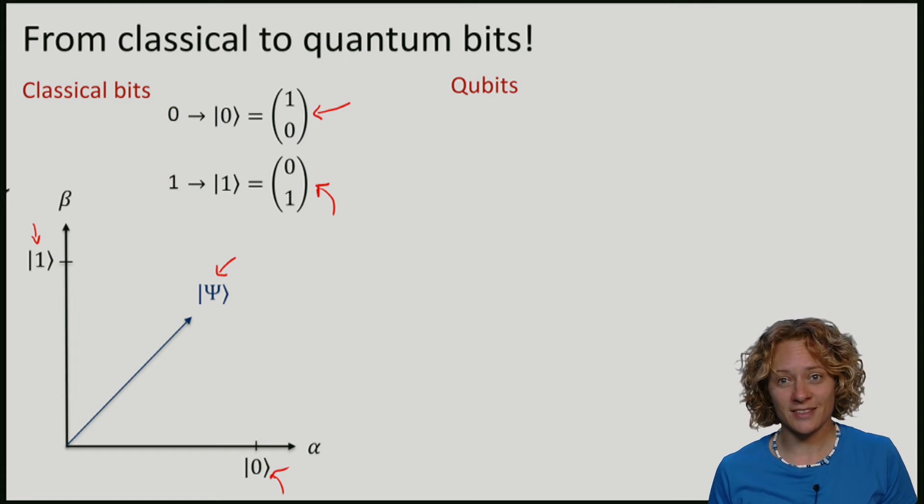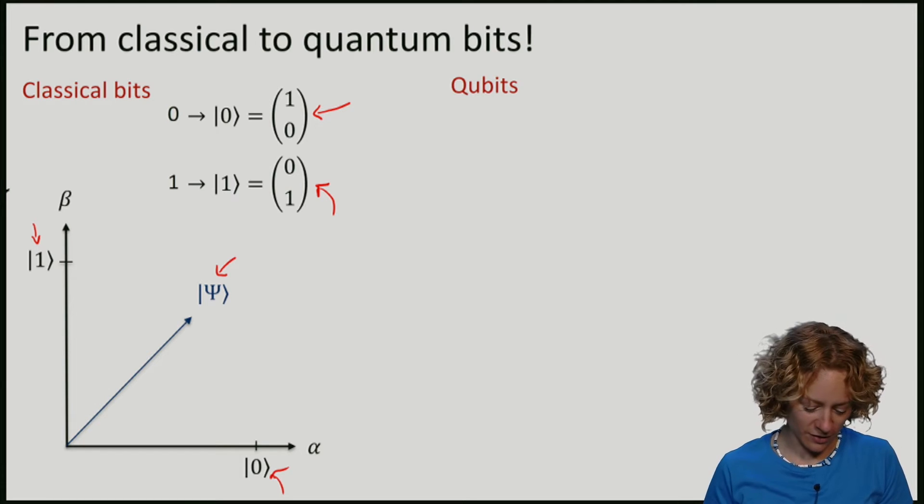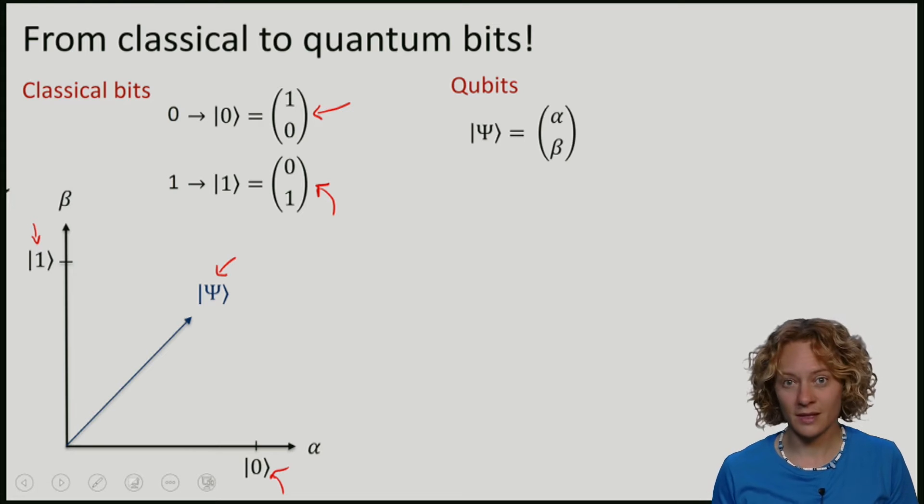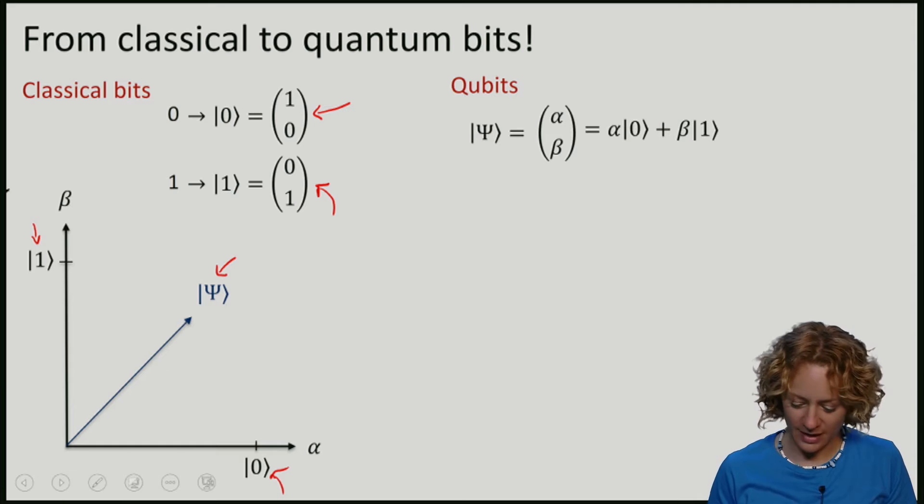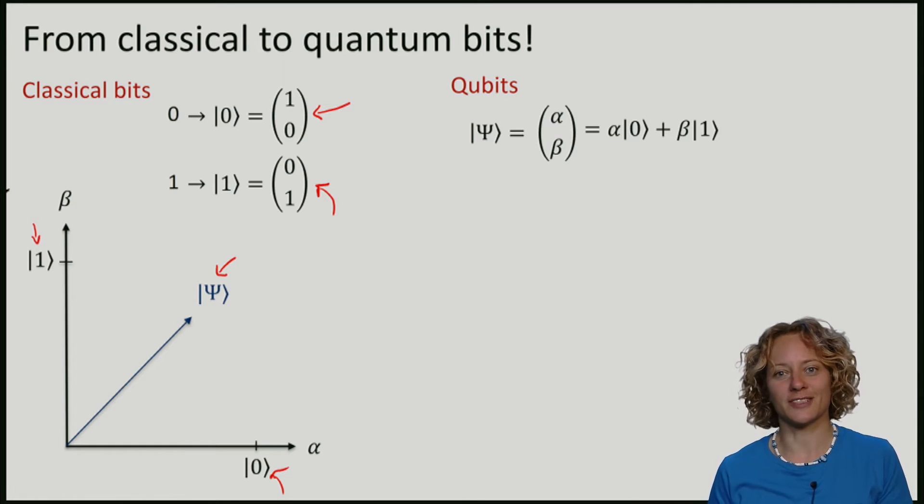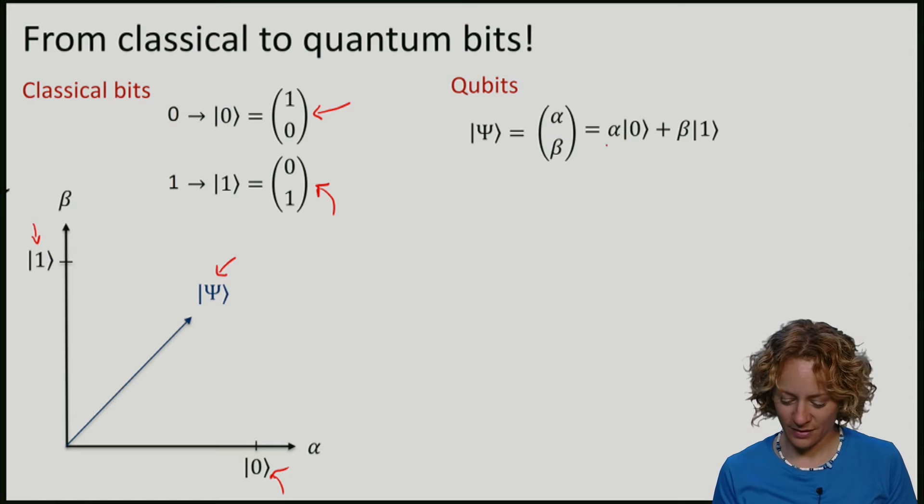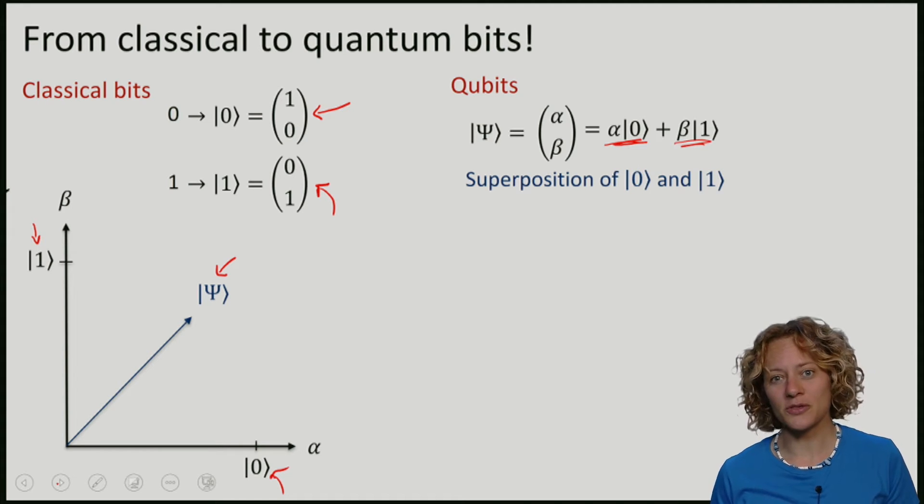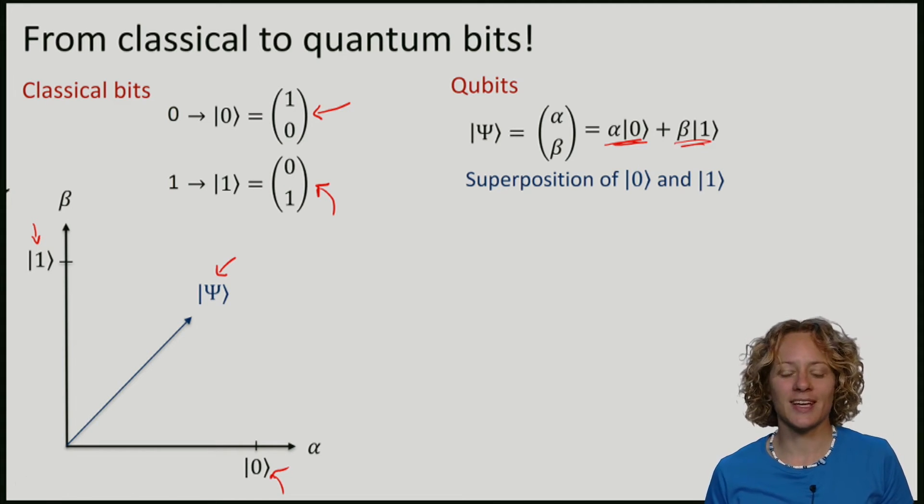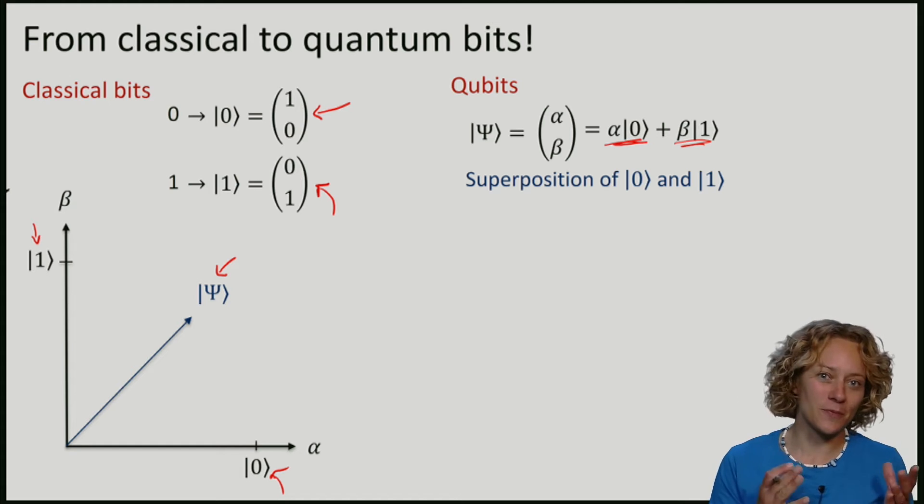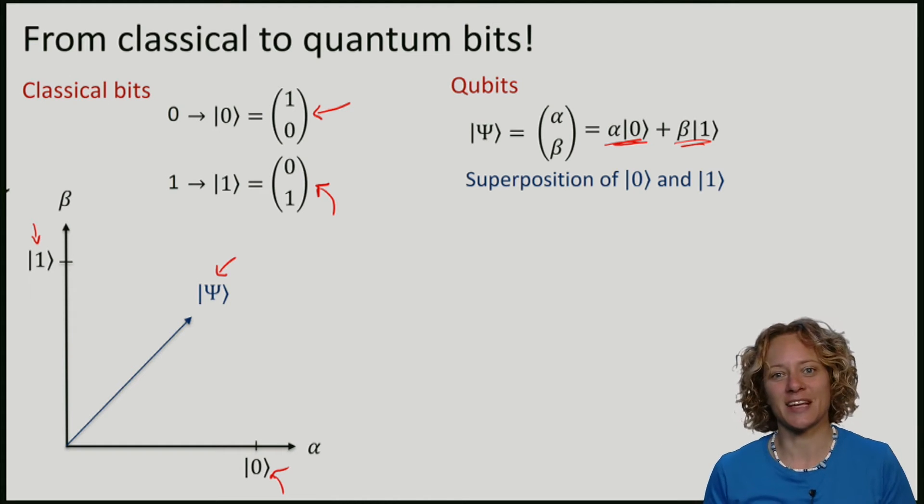We can of course express it in terms of the coordinates alpha and beta. So written in terms of the original classical bits, I can express the vector as alpha times zero plus beta times one. We also say that such a qubit can be in a superposition of zero and one. So a qubit has a little of the zero and a little of the one bit in it at the same time.